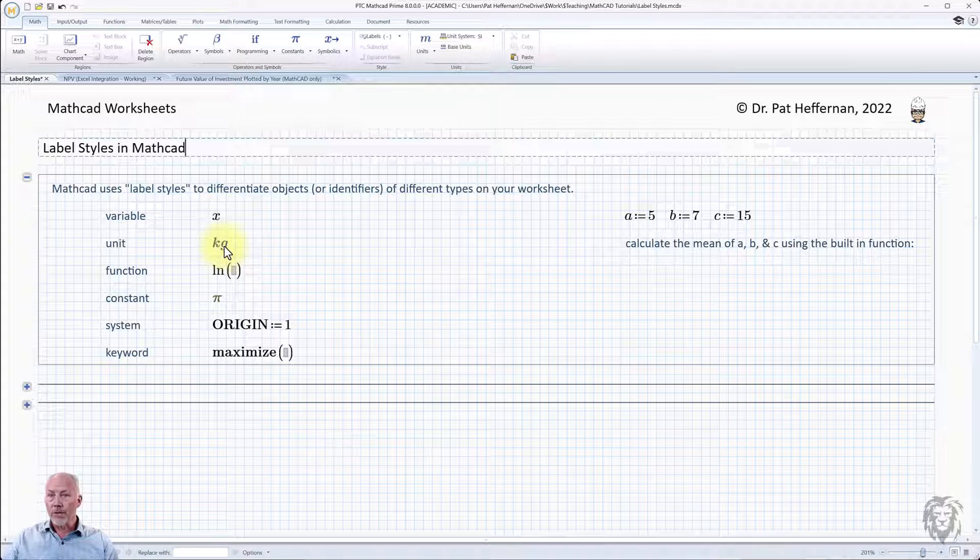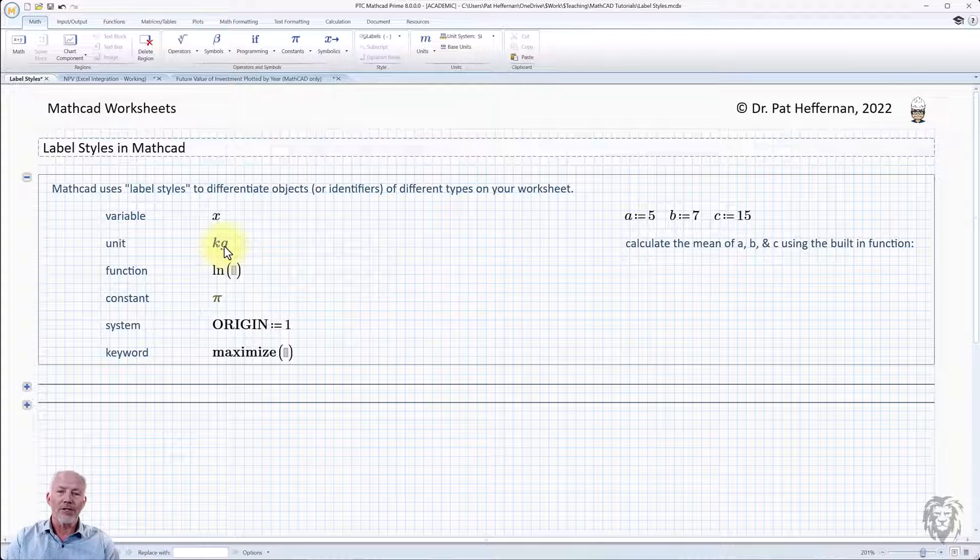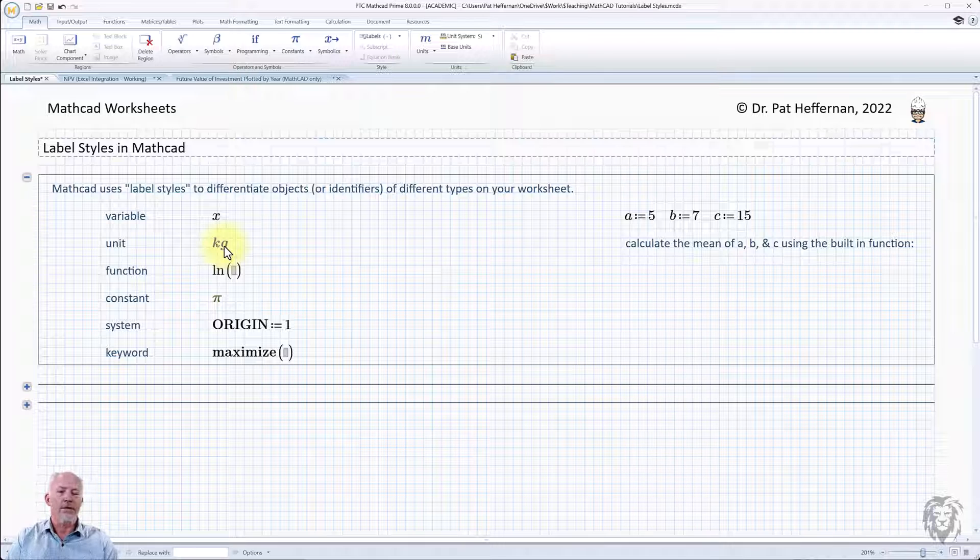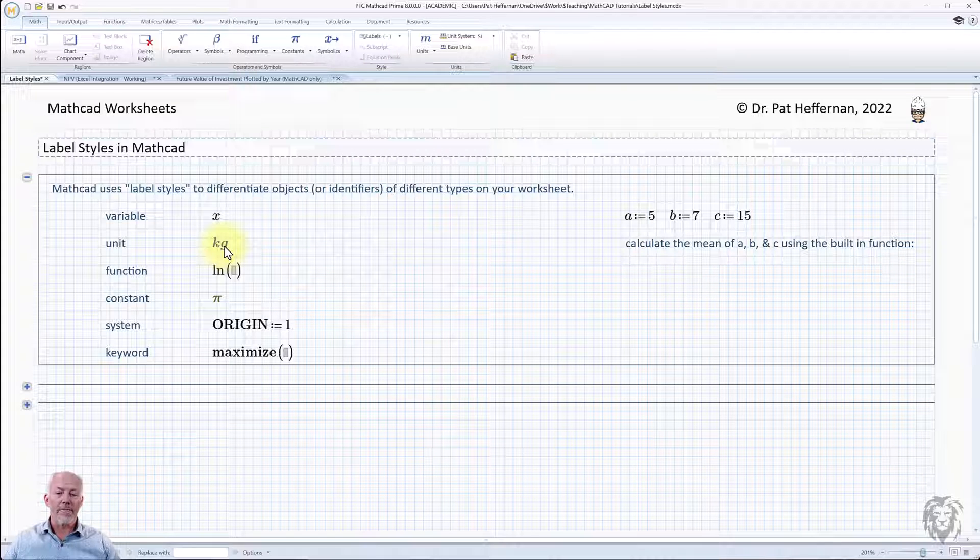So the next one down that we use quite a bit, and certainly I use a lot and I encourage you to build units into your Mathcad calculations. It's one of the huge benefits of Mathcad over something like Excel. And so we see that it is formatted slightly differently. So we have a kilogram here and we see it's kind of bold and it's kind of a blue color. And so that is the default formatting that Mathcad applies to anything that it sees as a unit variable. We could change it. We can make it look just like the variable, but then we wouldn't be able to visually discern what labels Mathcad was applying to it.